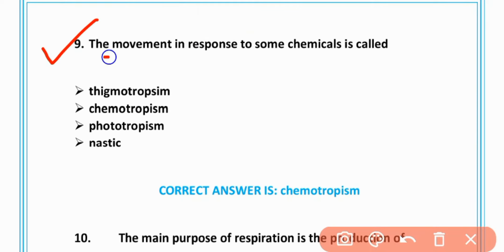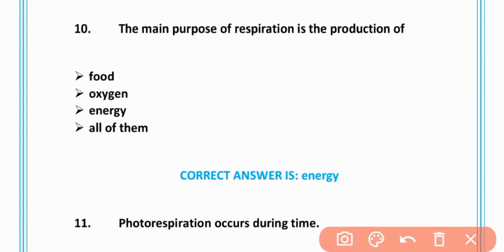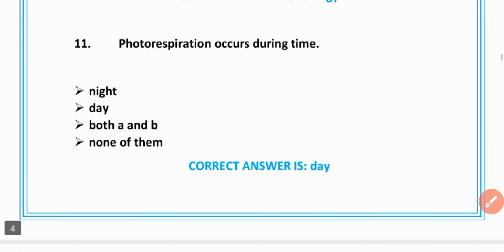MCQ number 9: The movement in response to some chemical is called chemotropism, option B is correct. MCQ number 10: The main purpose of respiration is production of energy, option C is correct.